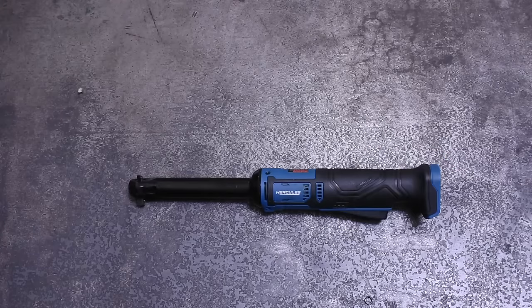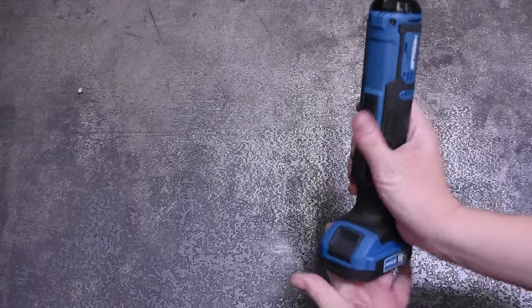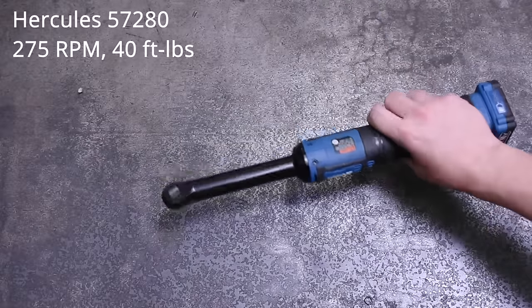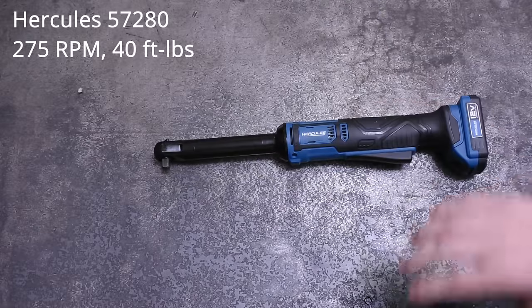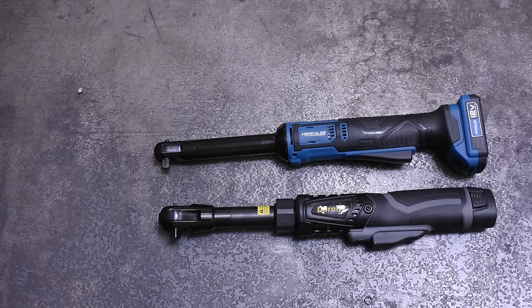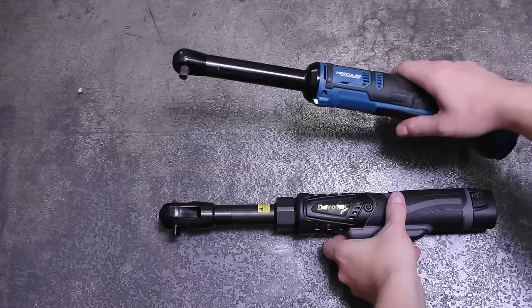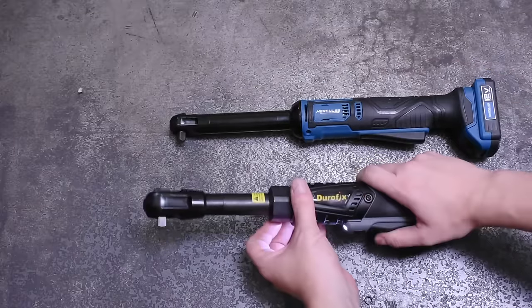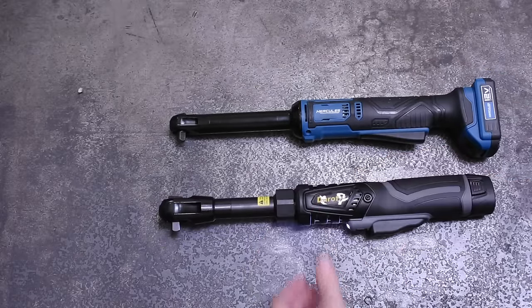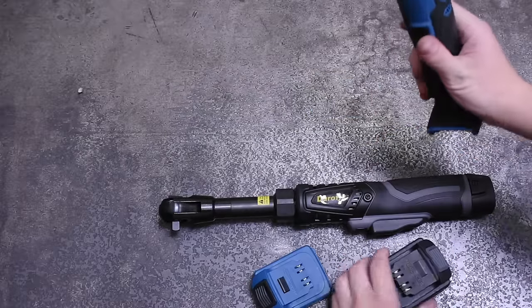Our last entry will be the Hercules. This one we have thanks to a viewer, Max, in Utah who wanted to see it tested. This is the extended reach one which goes for $99, but a standard length is about 90 and carries the same specs, which are 40 foot pounds of torque and 275 RPM. Its head is much smaller than the Durofix, which is pretty noticeable in use. We also have a larger 4 amp hour battery from Max that we're going to check out as well.